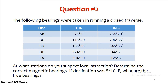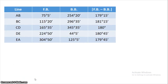Determine the correct magnetic bearings. If declination was 5 degrees 10 minutes east, what are the true bearings? We will correct the magnetic bearings and then apply the declination value of 5 degrees 10 minutes east to get the true bearings, which we will present in a tabular form showing forebearing and backbearing.